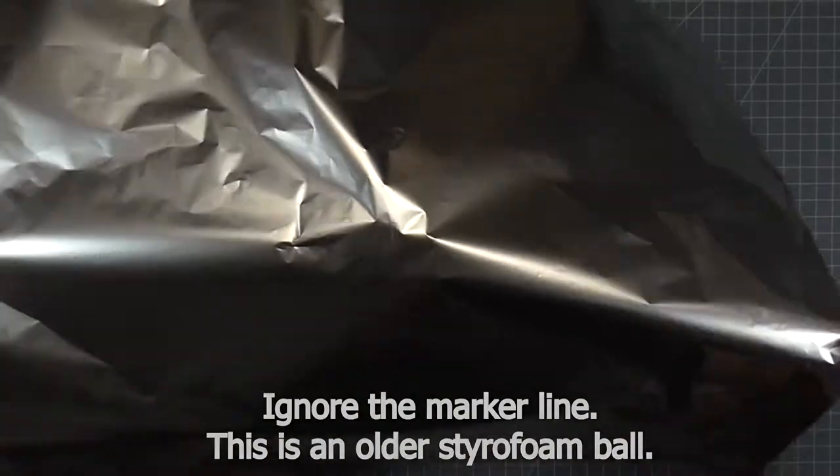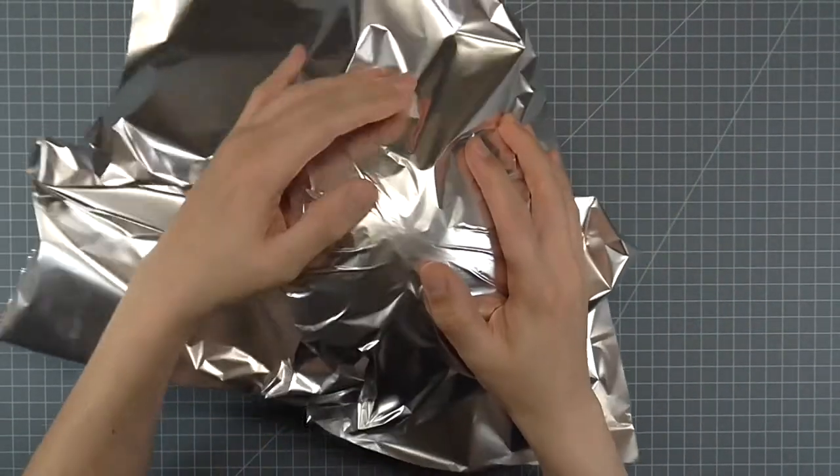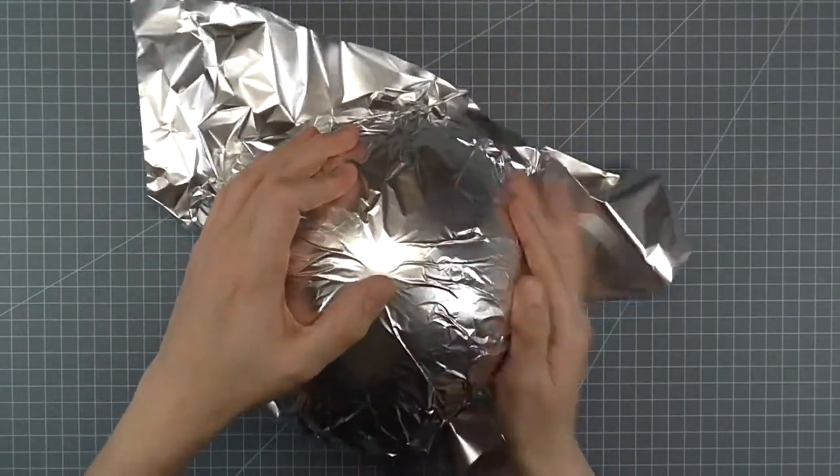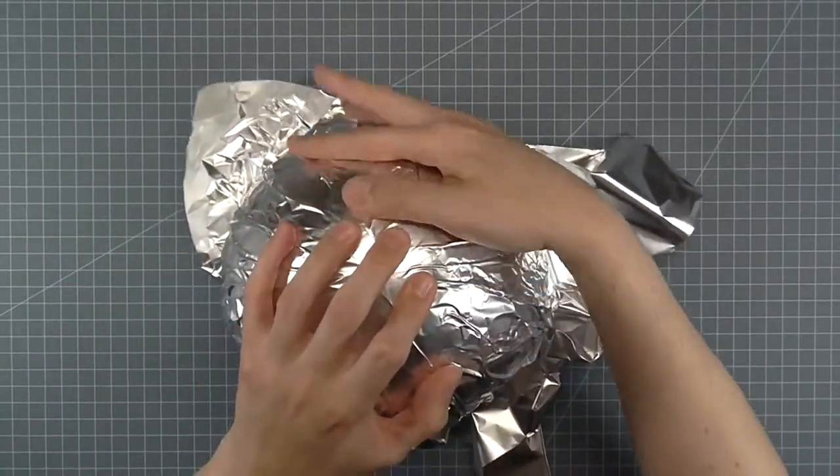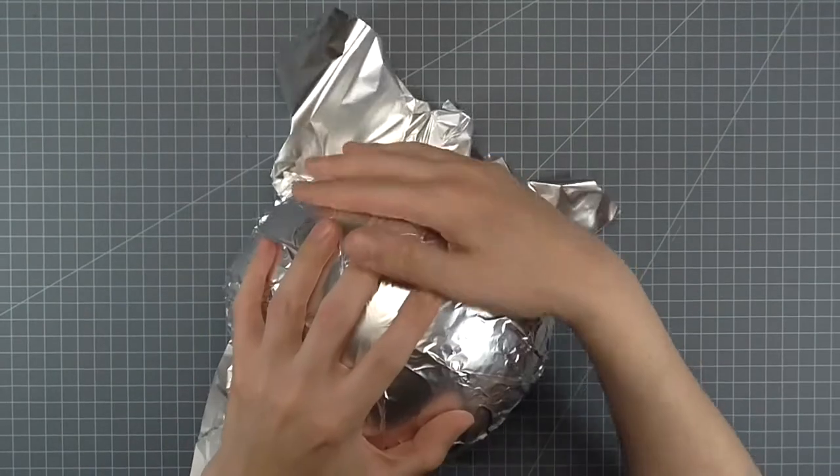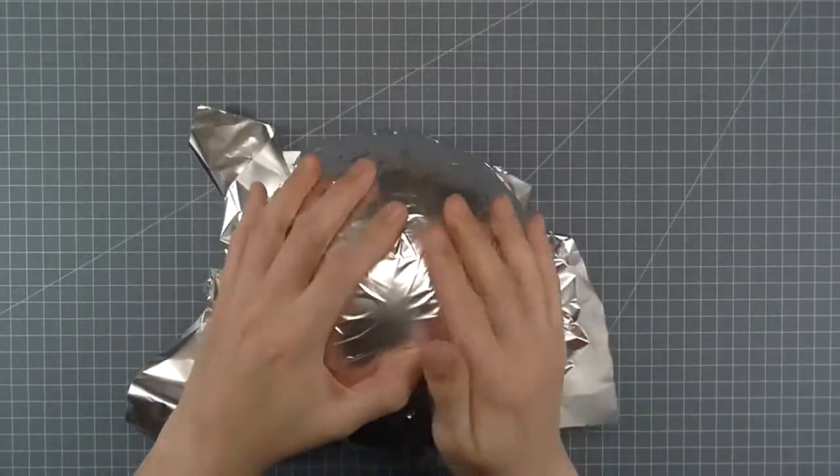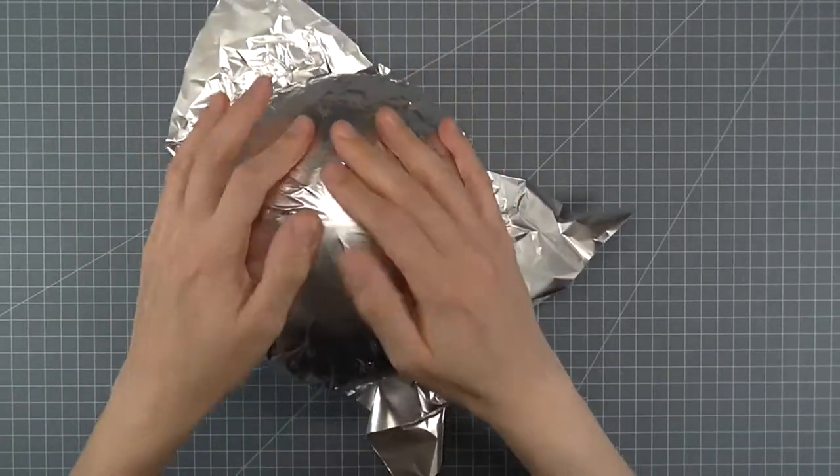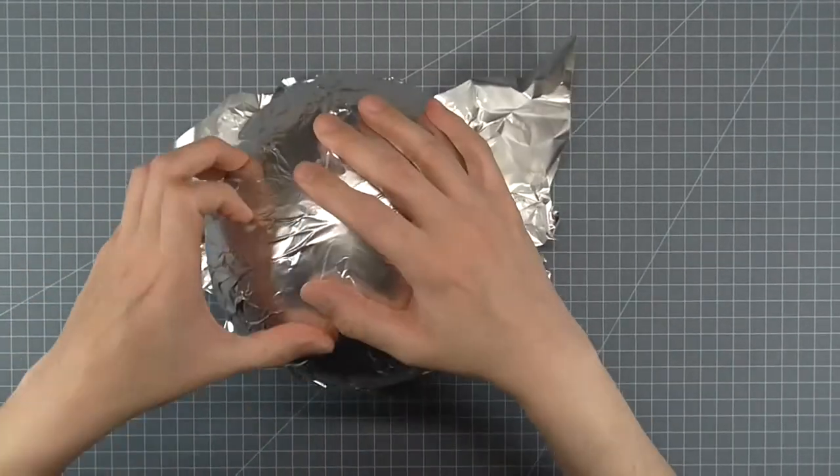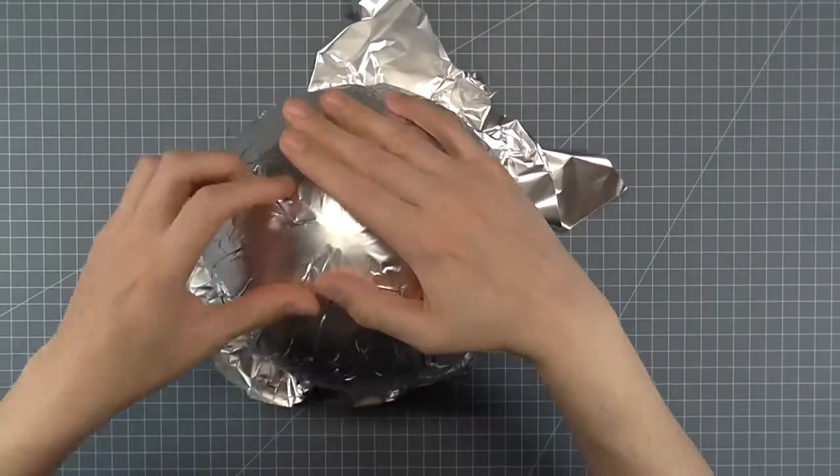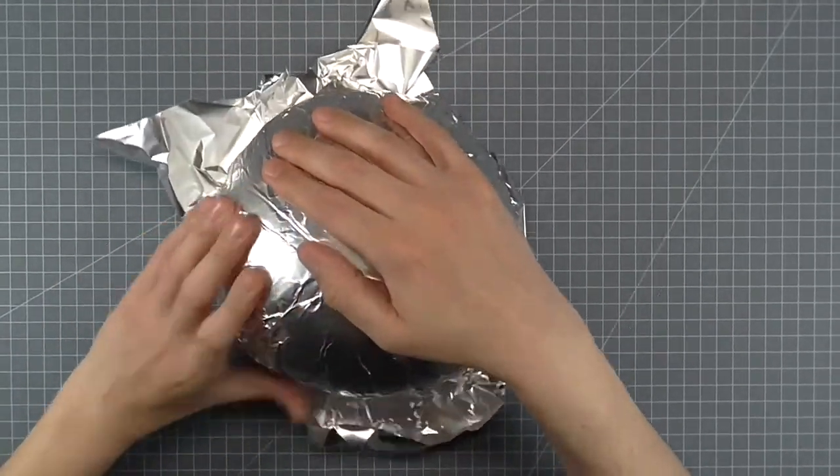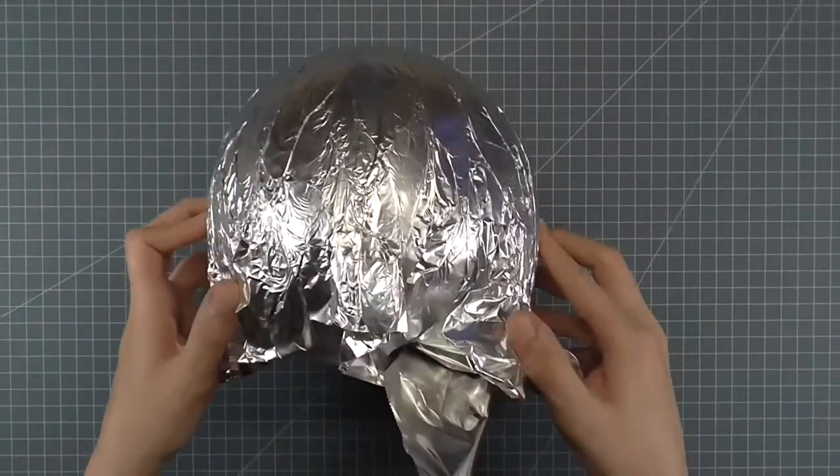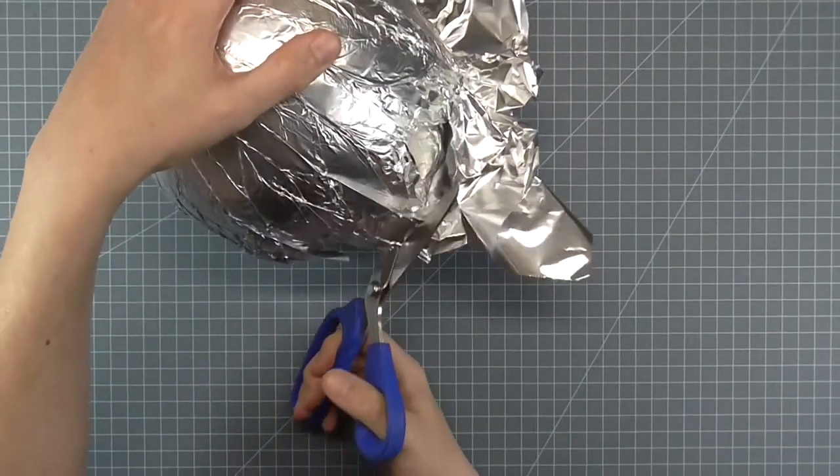Now you need to cover the foam ball with aluminum foil. The foil helps protect the foam from the steam. Drape the foil over the ball and press down as smoothly as possible. Use your fingers to smooth any ridges or bumps. Cut off the excess foil at the bottom.